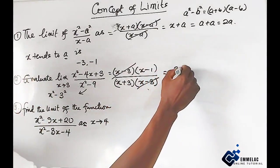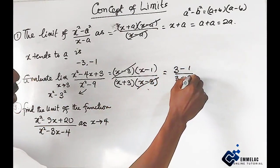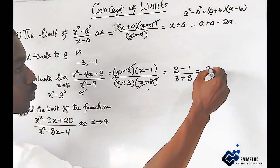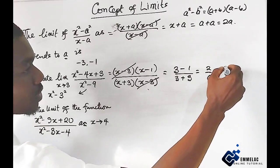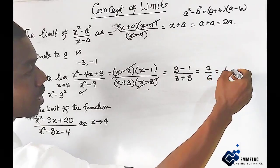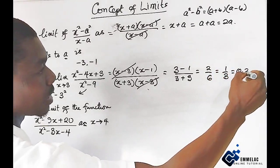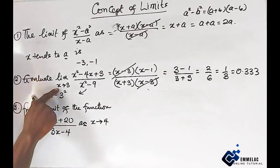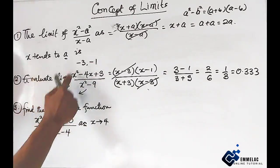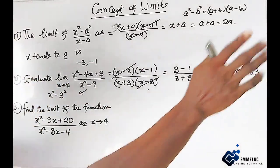As x approaches 3, we have 3 minus 1, all over 3 plus 3, which gives us 2 over 6, which gives us 1 over 3. In decimals this is approximately 0.333. So as x approaches 3, this function approaches 0.3333.